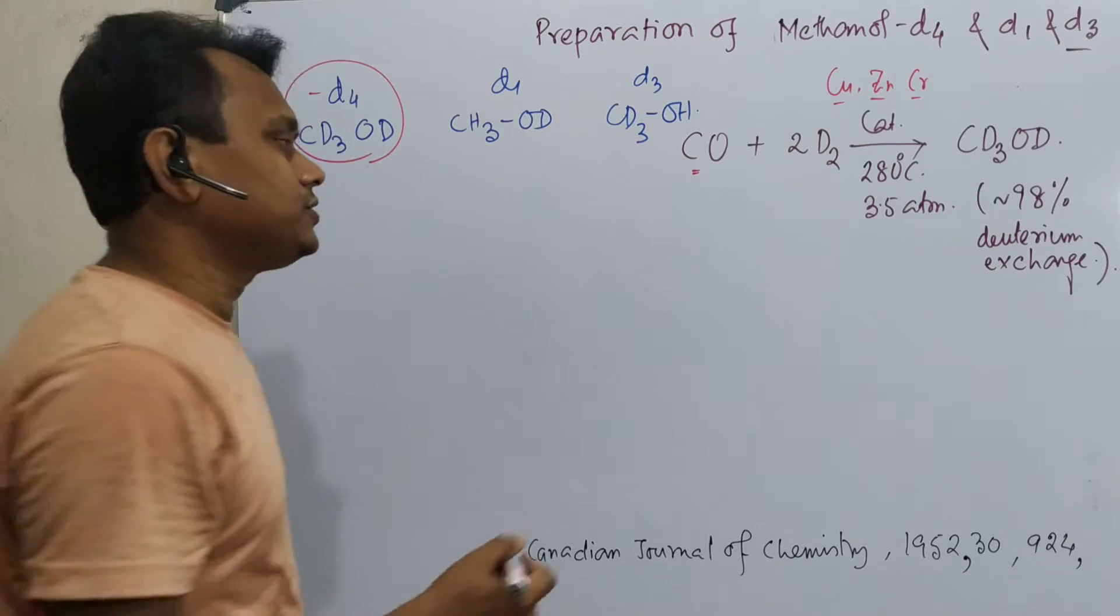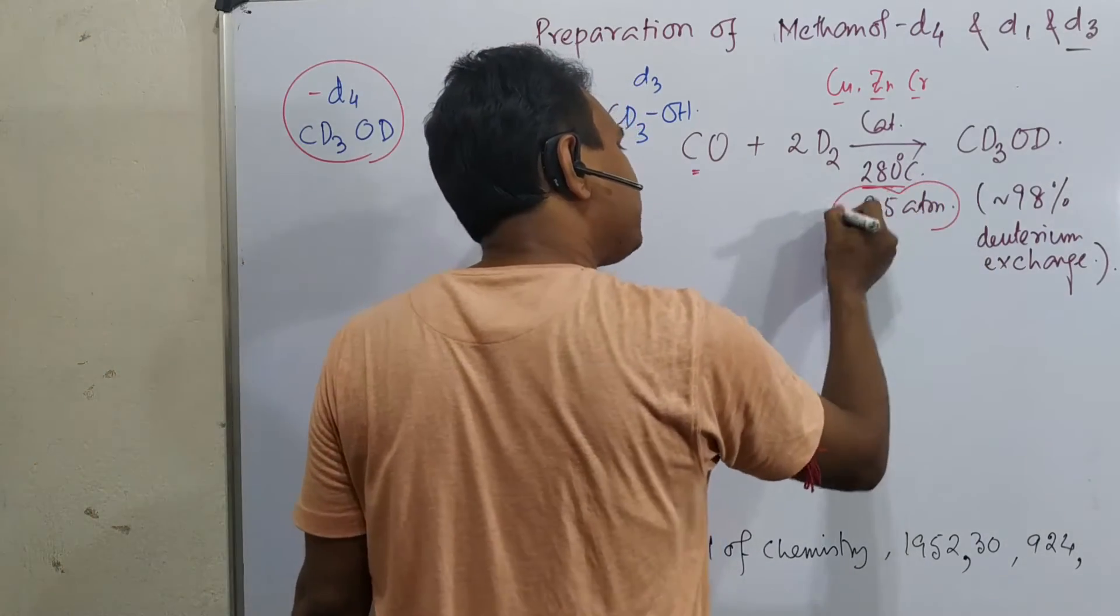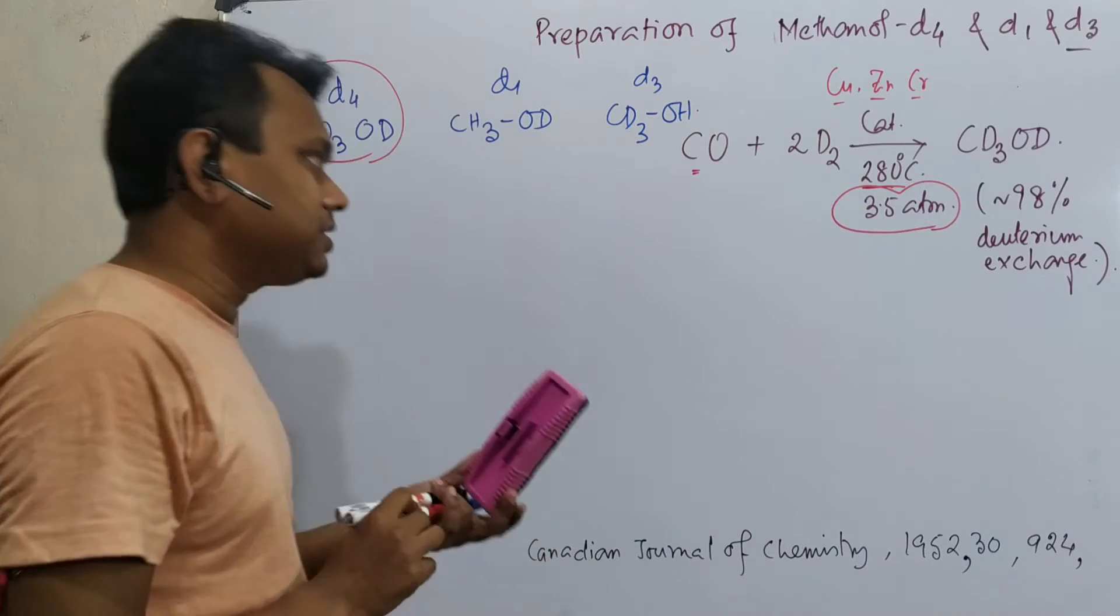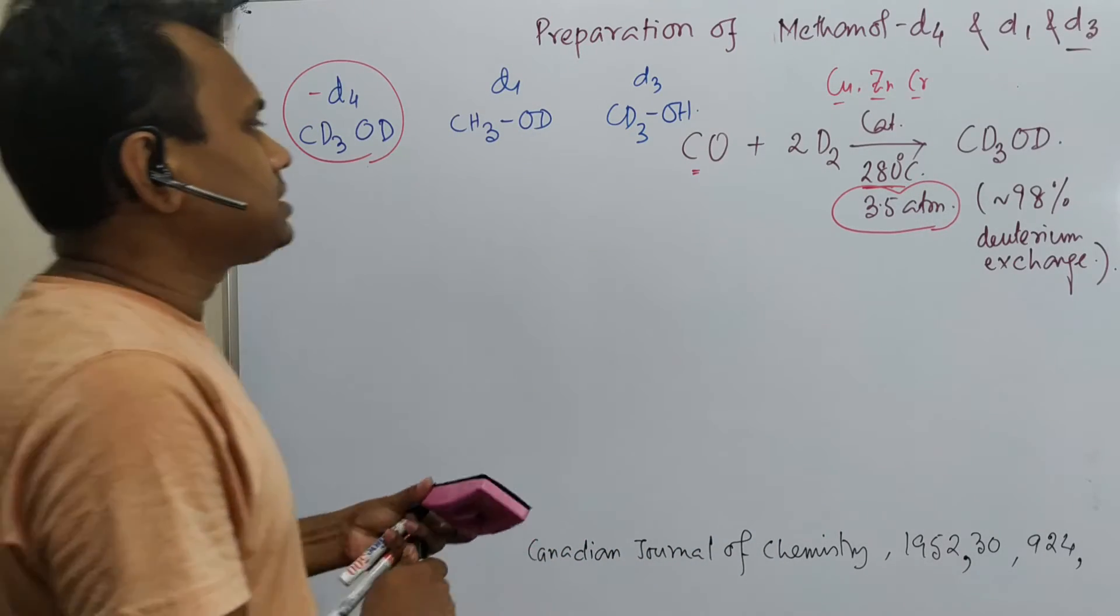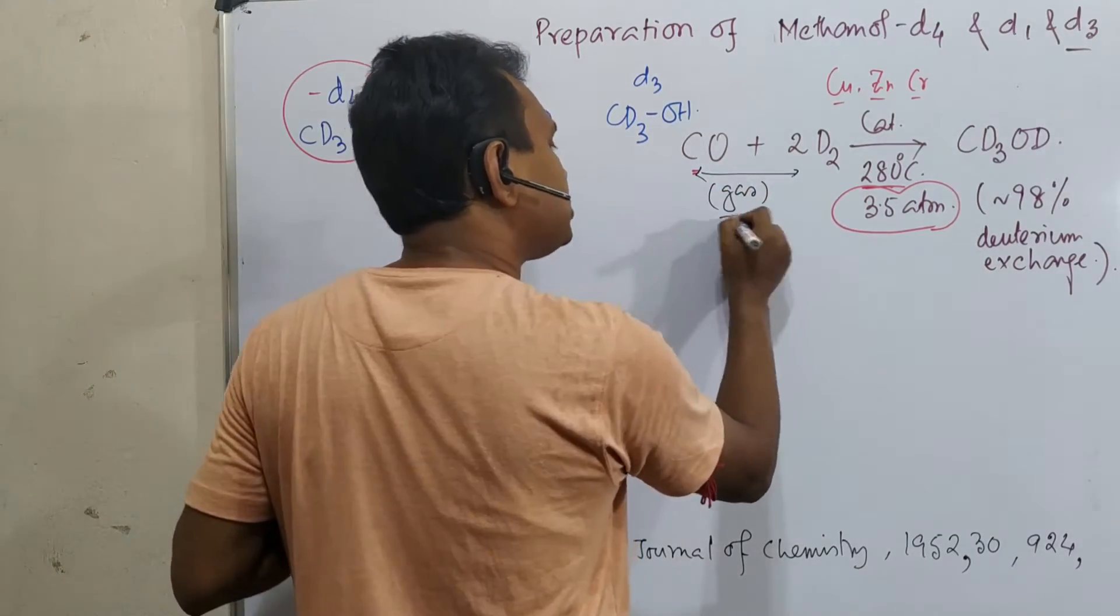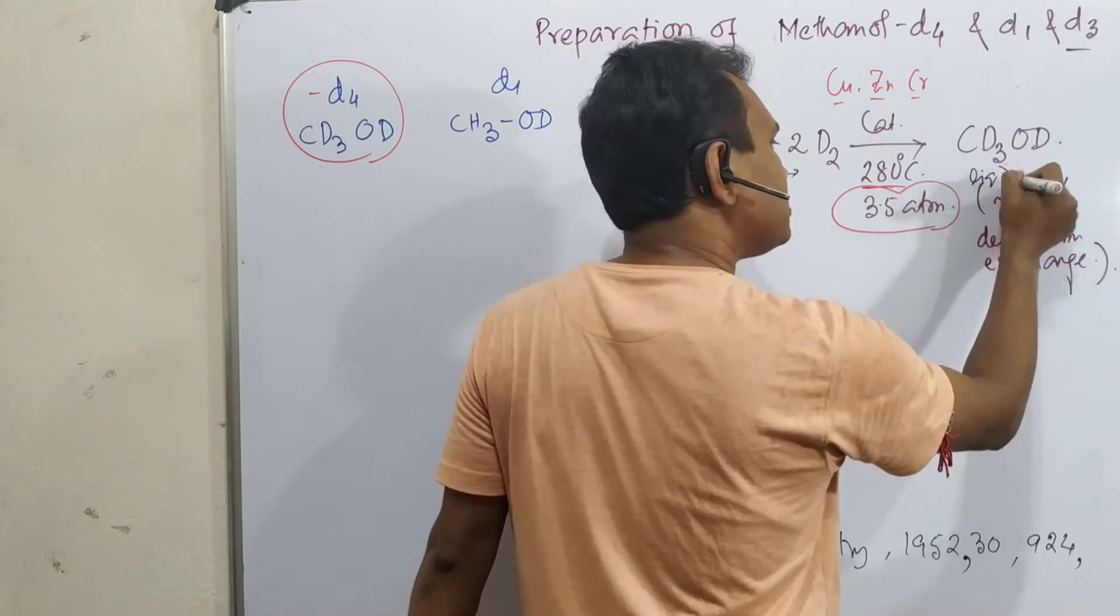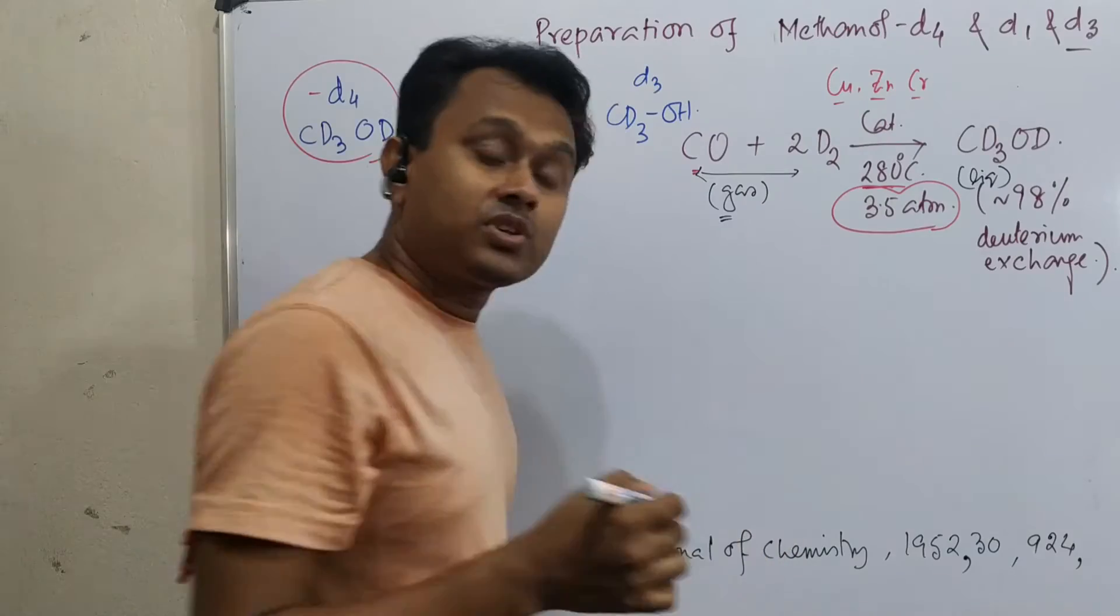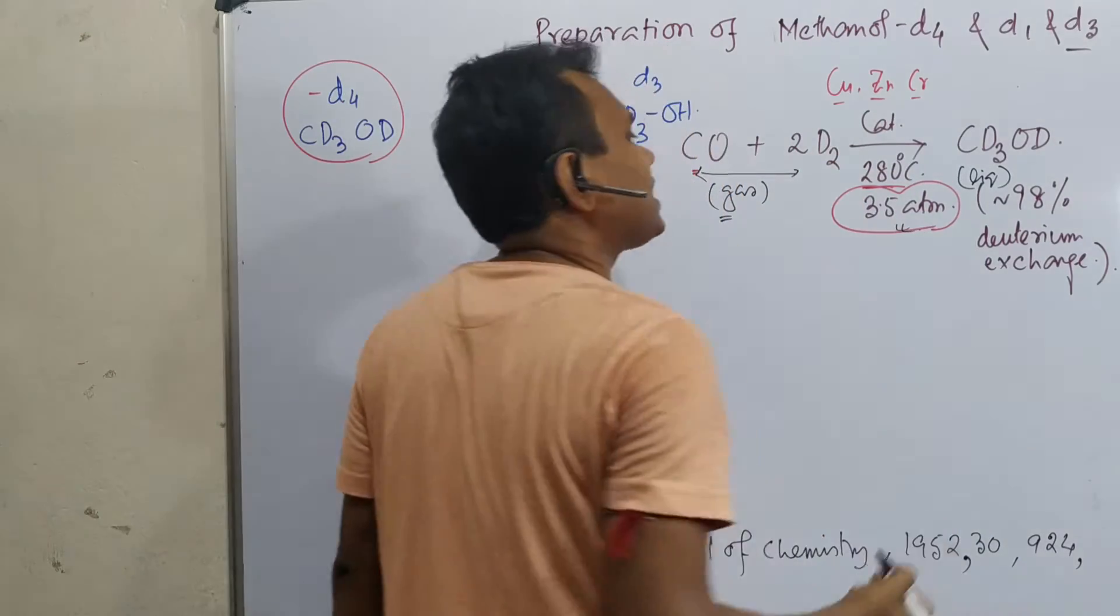So this is the solid catalyst on which this reaction is carried out under 280 degrees centigrade and 3.5 atmosphere. Why this high pressure needed? See, if you look at this molecule little carefully, this is carbon monoxide and this deuterium, and both are gas. So reacting gas into this is actually a liquid, liquid is difficult, so that's why you need this high pressure such that reaction can occur smoothly.